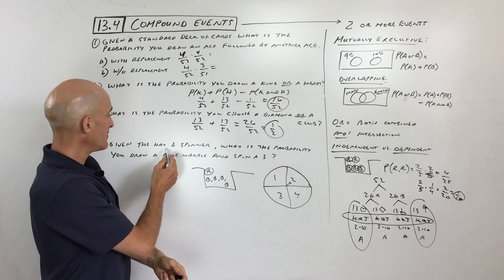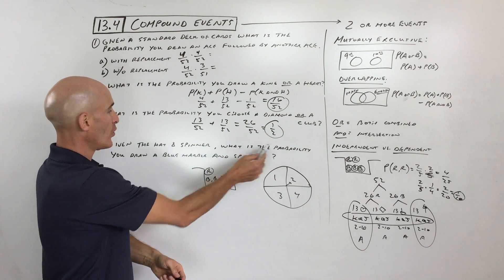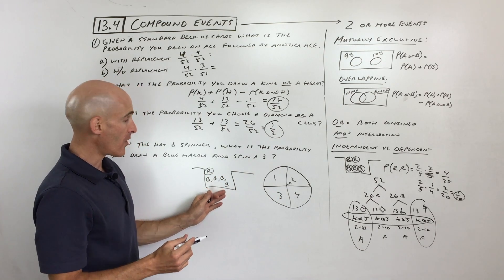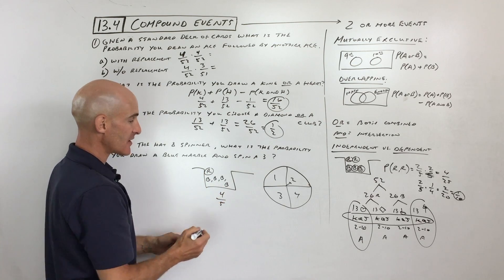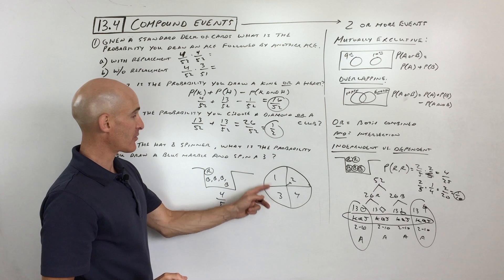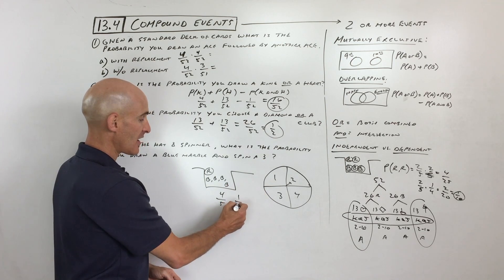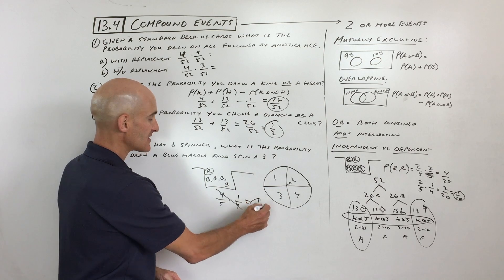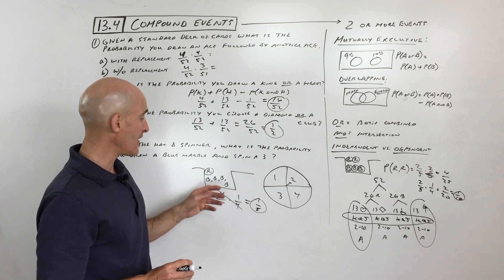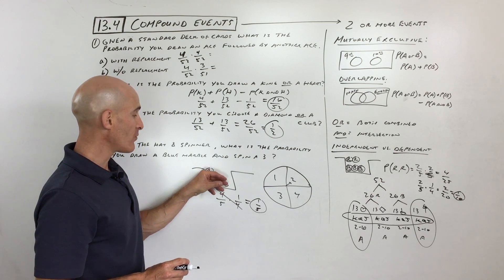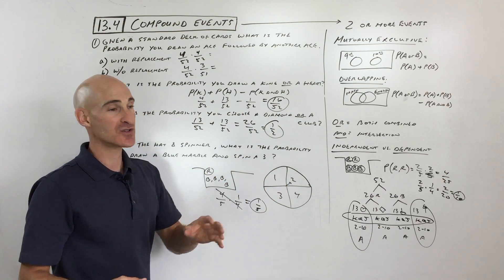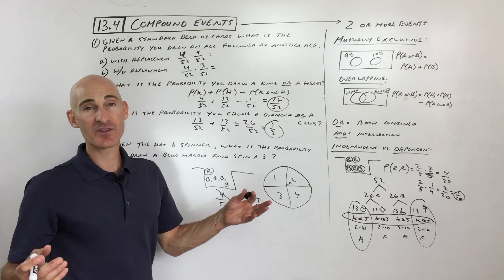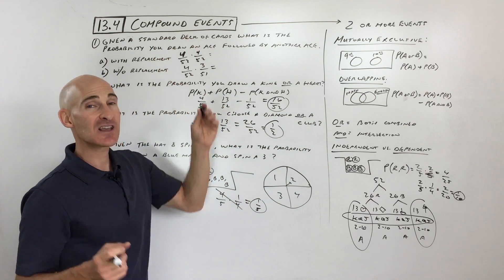Given the hat and spinner shown, what is the probability that you draw a blue marble and spin a three? The probability of drawing a blue marble is four out of five, and the probability of spinning a three is one out of four. Multiply those together — the fours cancel — and you get one-fifth. These are independent events: picking the marble doesn't affect what happens on the spinner. That basically wraps up this section on compound events.